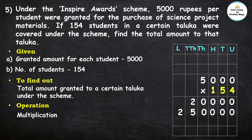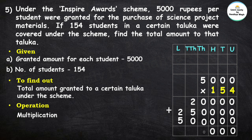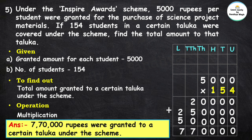Now multiply by 1 — 1 is in the hundreds place, so write zeros in the unit and tens places. 1 zero is 0, 1 zero is 0, 1 zero is 0, 1 five is 5. Now let's add these numbers: 0, 0, 0; 2 plus 5 plus 0 is 7; 2 plus 5 is 7. So here our final answer is: 7,70,000 rupees were granted to a certain taluka under the scheme.